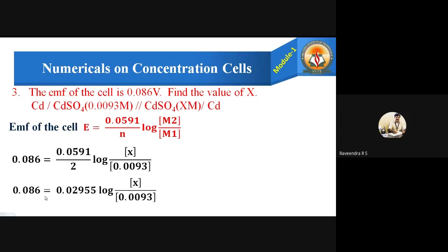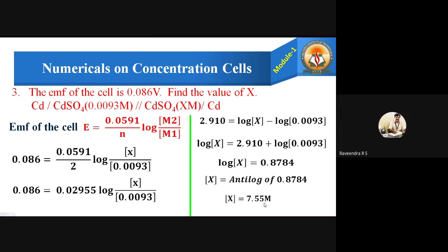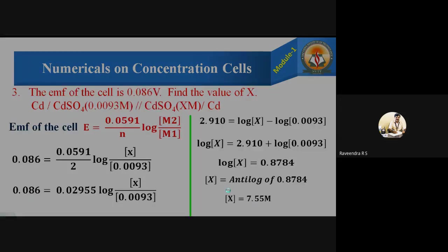After dividing 0.086 by 0.02955 we get 2.910 = log(x / 0.0093). Using log(a/b) = log a − log b, we get log x = 2.910 + log(0.0093). Solving, log x = 0.8784, so x = antilog(0.8784) = 7.55. Therefore x equals 7.55 molar — this is the value of M2, the unknown concentration.